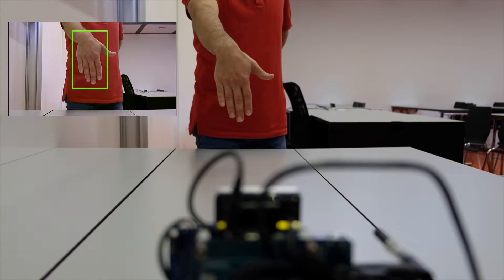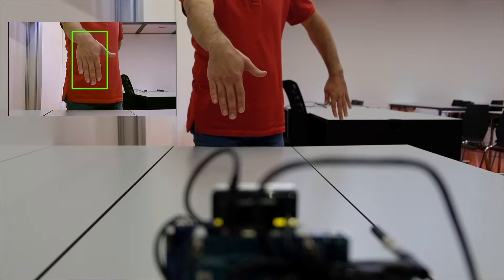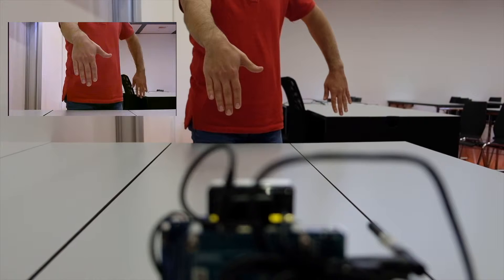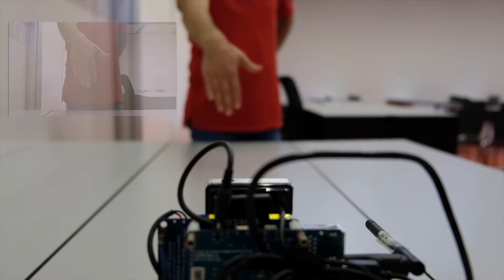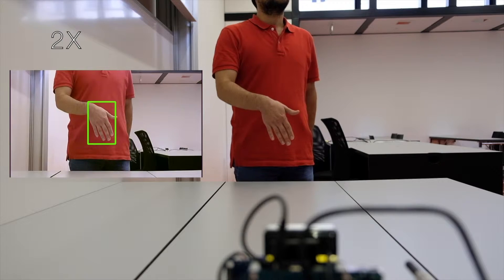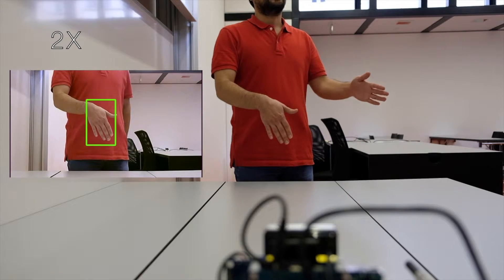Detection is never perfect. Occlusions, low illumination, and the need for extensive computational resources are the typical problems in computer vision systems. Our system is designed to detect only one hand. What if there's a second hand?